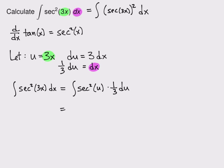By the constant multiple rule for integrals, I can pull the 1 third out front. And so now all I have left is secant squared of u, the integral of that with respect to u.